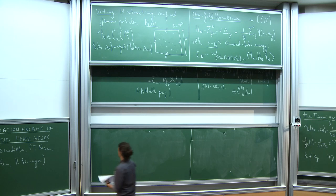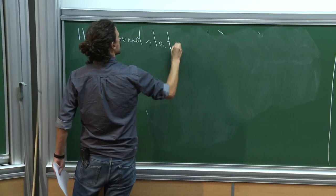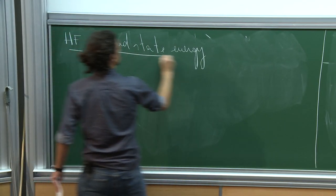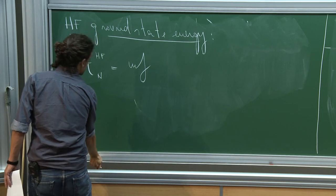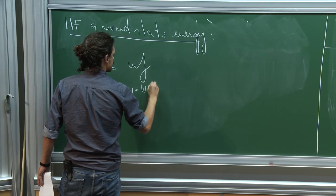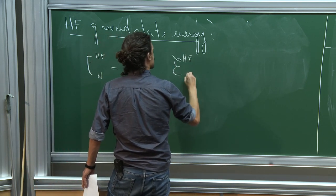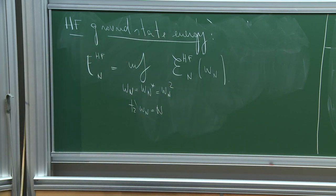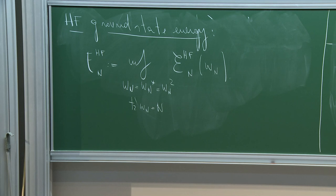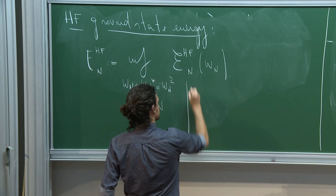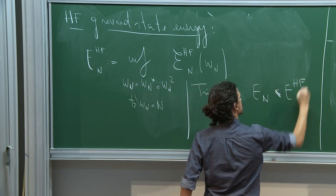The Hartree-Fock ground state energy is the smallest energy a Slater determinant can reach, obtained by minimizing the Hartree-Fock energy functional over rank-N orthogonal projections. Since we minimize over a smaller class of states than the full many-body problem, this gives an upper bound: the true many-body ground state energy is less than or equal to the Hartree-Fock ground state energy.